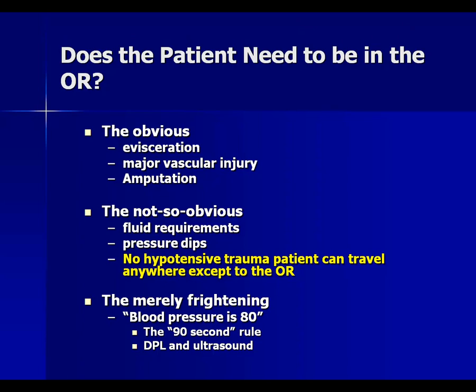One cardinal rule: no hypotensive trauma patient can travel anywhere except to the operating room. They cannot go to CT scan, angiography, or MRI. Hypotension keeps you in the resuscitation room until we figure out which body cavity is being bled into, and the patient then needs to go to the OR. If you get the frightening news that blood pressure just dropped to 80, the team leader has 90 seconds to figure out if it's real or a mechanical malfunction. The FAST is extremely helpful in sorting that out. If not confirmatory, diagnostic peritoneal lavage can be used, although this is done extremely rarely these days.